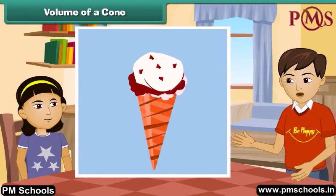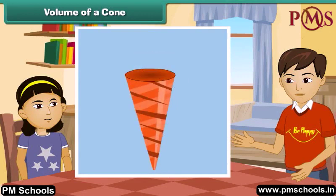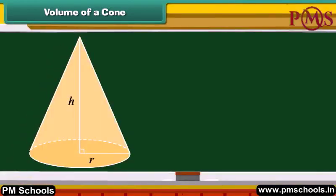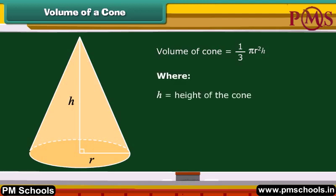The volume of a cone is equal to one-third pi R squared H, where H is the height of the cone and R is the radius of the circular base of the cone.